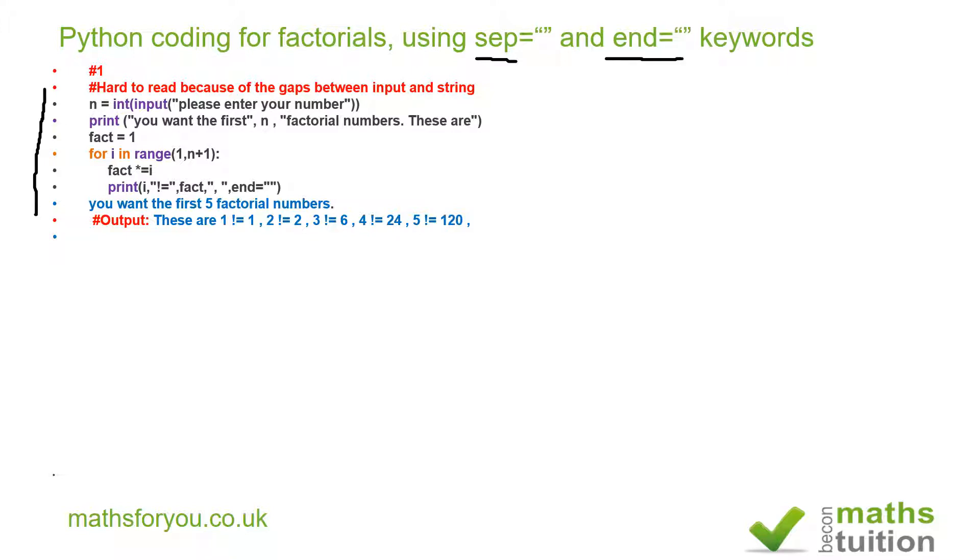It's asking me here to input the number of factors required and I've put in five, so I'm looking for the first five factorials. To start with, I've got fact is equal to one, so that's my starting point. I've started with one there.